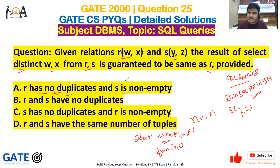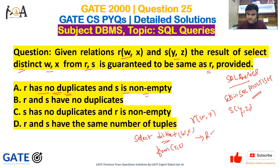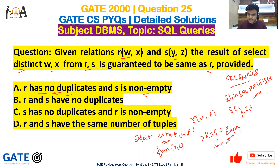S must be non-empty. Why must it be non-empty? Because if S is empty, then the result of this query — R cross S — would be empty. That is not fitting with the situation, so S should be non-empty.